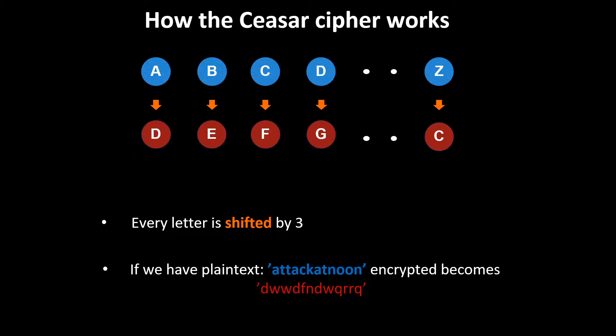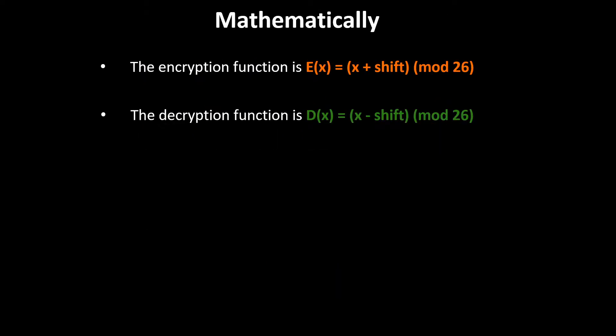So D becomes backward shifted—subtracted by three—to become A. Mathematically, the encryption function is E(x), where we take the letter x, add the shift, then take modulus 26 so that if we're at the end of the alphabet, we map back to the beginning. The decryption function D(x) is simply the letter minus the shift, then modulus 26.